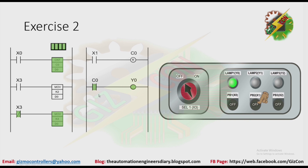Now let's press PB2. After pressing PB2, X1 will be energized, and that will make Counter 0 here to reset. C0 here will go back to its initial state, and that will make Y0 to turn off. That's it — now let's go to our next exercise.